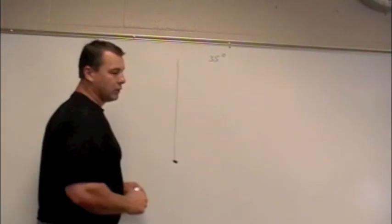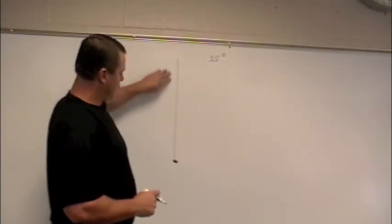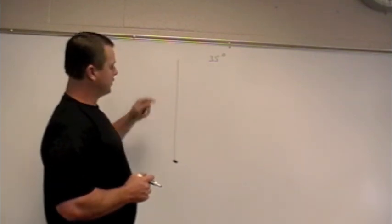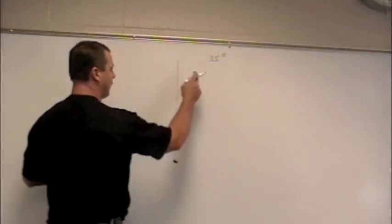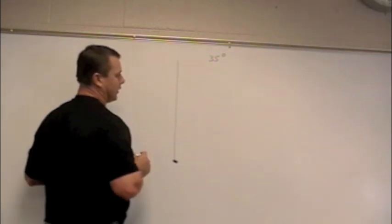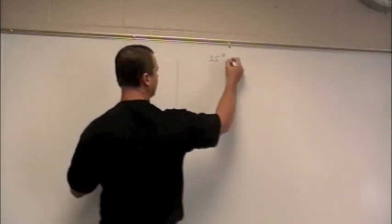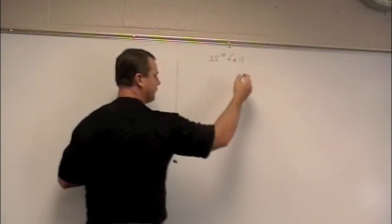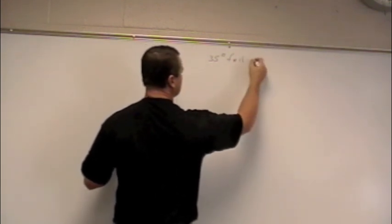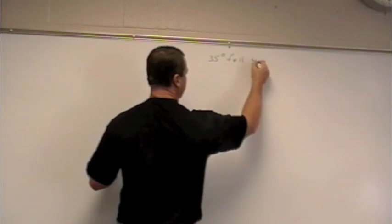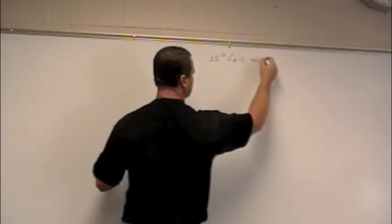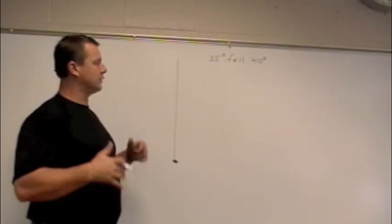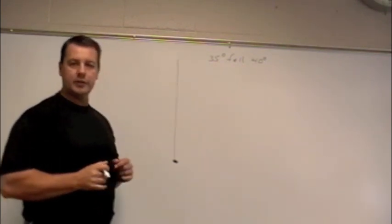All right, today we're going to look at some temperature problems. It usually makes it easier if you go ahead and just draw some real basic thermometer or something just to draw some numbers on. And what we're going to look at today is say the temperature was 35 degrees during the day and it fell 40 degrees overnight. And you want to figure out what is the new temperature.